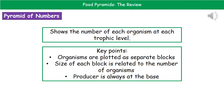Welcome to our review on food pyramids. What we're going to look at here are the two different types of pyramid that we can use to demonstrate different feeding relationships. The first one is the pyramid of numbers, which just shows us the number of each organism at a trophic level.